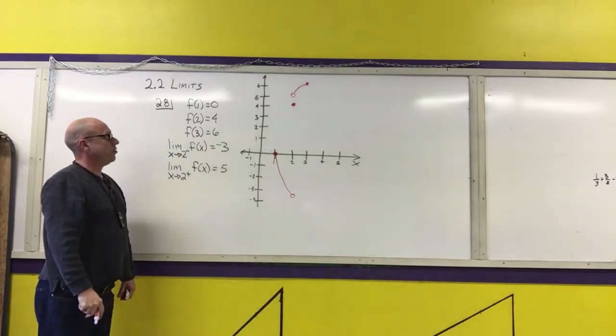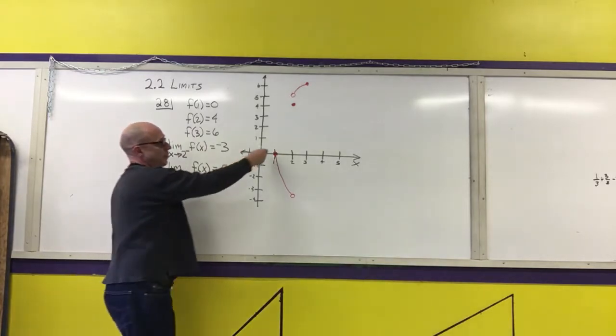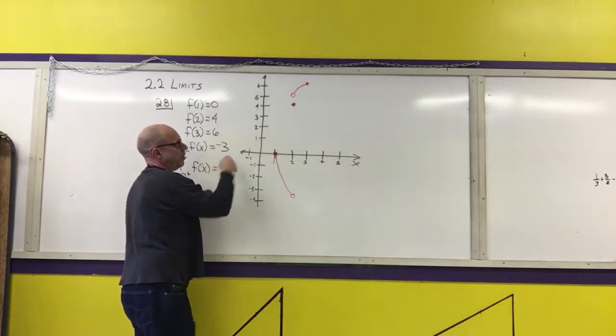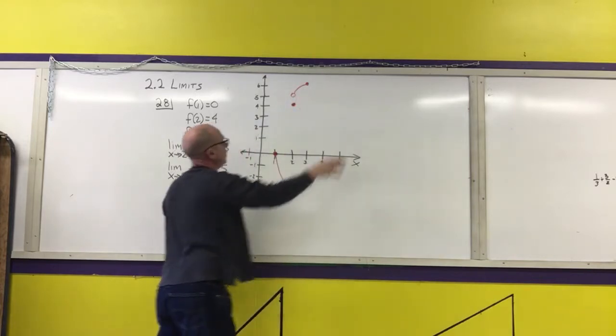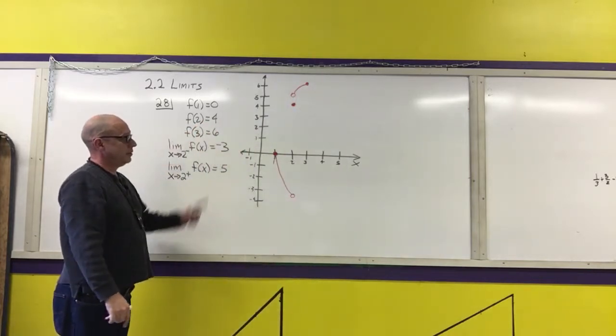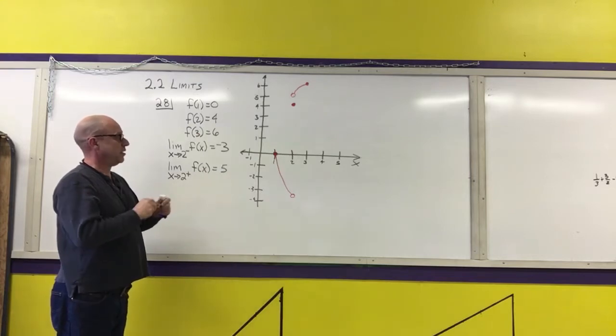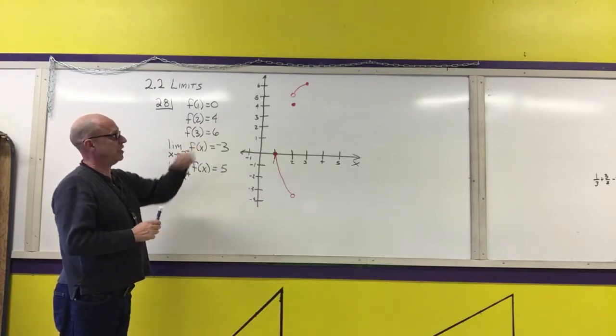And that's all I need to do to graph this. It doesn't tell me anything about the stuff to the left of 1 or to the right of 3. And again, like I said, this could be an infinite number of graphs. This does meet the requirements.